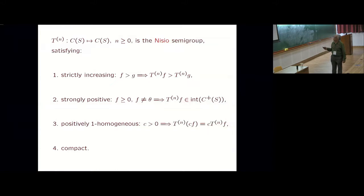This is another object in control called Nisio semigroup. It maps continuous function to continuous function under the conditions I have given. Standard properties: strictly increasing, strongly positive. It maps a non-negative function which should not be zero into the strictly positive. Positively one homogeneous. This is also important. If I put some positive scalar here, I can pull it out. It's a compact operator under technical conditions. That equi-continuity, etc.